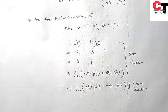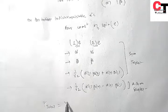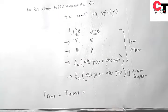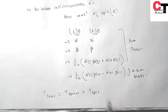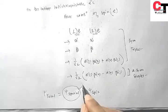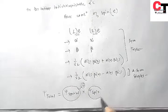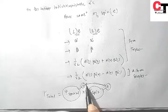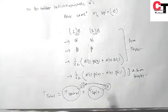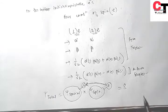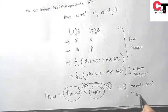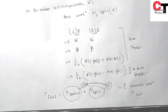Now we have to calculate the total wave function. We know the total wave function is the spatial part times the spin part. In the spatial part we have two probable combinations, and in the spin part we have four combinations. If these two and four parts are combined, we will get a total of eight probable combinations for the total wave function.